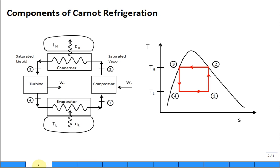Components of the Carnot refrigeration cycle: an evaporator which is just a heat exchanger, a condenser, a compressor, and a turbine. The refrigerant flows in this counterclockwise direction. The numbering system is one as the input to the compressor, then two, then three, then four for the states.